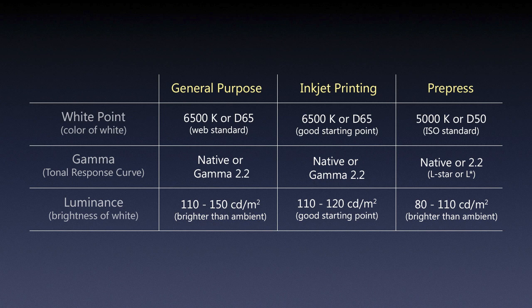As far as luminance for pre-press — also recommended by ISO standards — it should be brighter than the ambient since it's a working environment. Go somewhere from 80 to 110 candelas depending on how low your monitor can go. We'll also be soft proofing our images, so a lot of these settings will be adjusted based on soft proofing options. I'll recommend these for now and revisit them when we cover soft proofing.